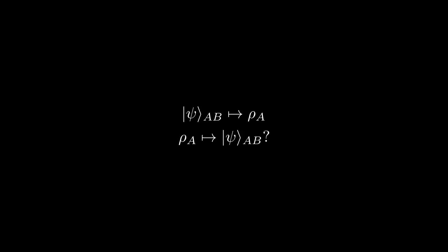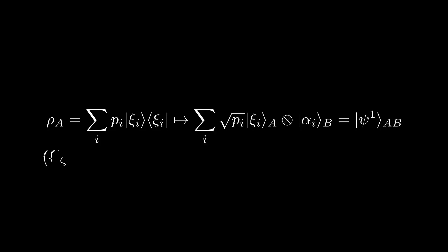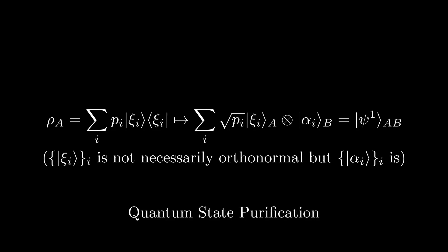Well, as it turns out, the answer is trivially yes. Suppose our density matrix rho A has the following ensemble of pure states. Note that here, we are not assuming that these states are orthogonal with each other, though they are normalized, of course. We can simply create a state psi 1 over AB of the following form where each pure state that makes up rho A is tensored with some orthonormal basis vector in B defined as alpha I. This state, psi 1 AB, is referred to as a purification of A, since tracing out B leaves us with the original mixed state for A that we started with.